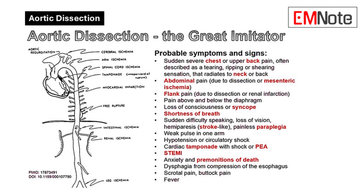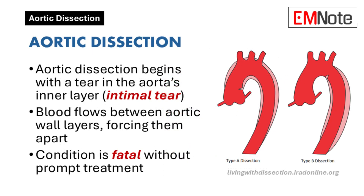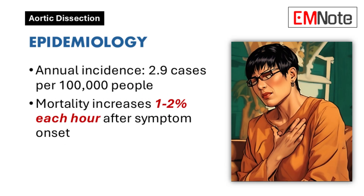So to get us started, what is aortic dissection? Aortic dissection is a tear in the inner layer of the aorta, which allows blood to flow between the layers and can lead to rupture or damage to other organs. This is a very serious problem — the mortality rate increases every hour that treatment is delayed.